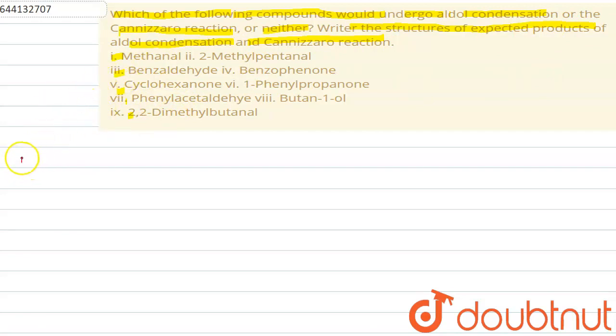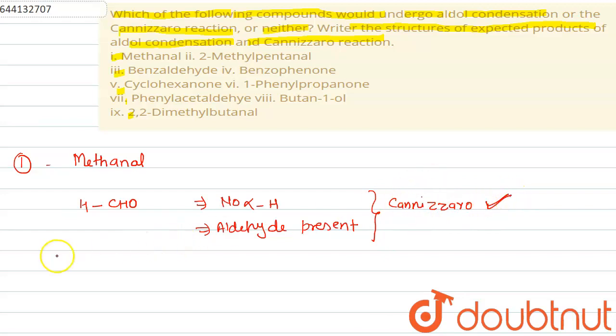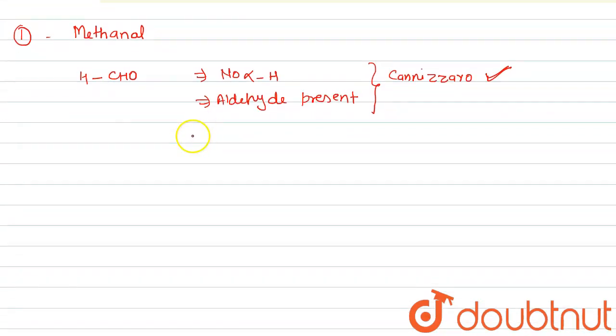First, methanol. At CHO there is no alpha hydrogen but aldehyde group is present, so it gives Cannizzaro reaction. Aldehyde reacts with OH minus, this gives CH3OH, and formic acetate.